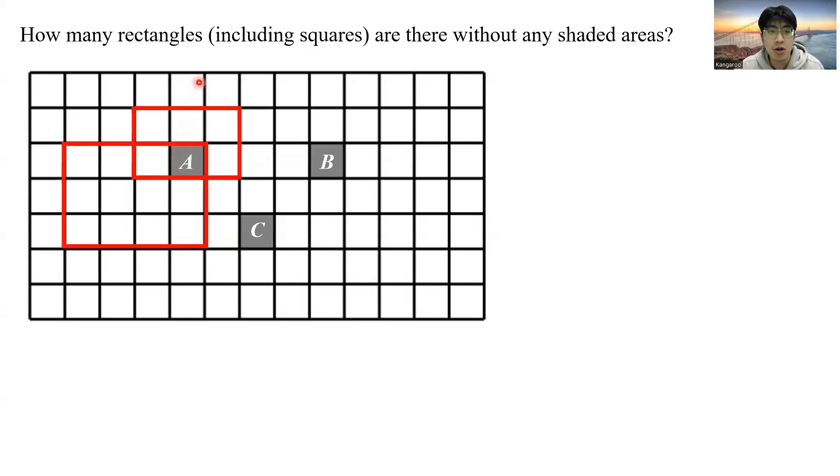Let's see. On the top of A, we have three lines. On the bottom, we have one, two, three, four, five. On the left, we have one, two, three, four, five. And to the right, we have also one, two, three, four, five, six, seven, eight, nine. So there are a total of 675 rectangles that would contain this shaded area A.